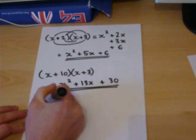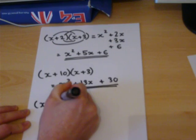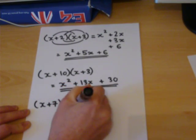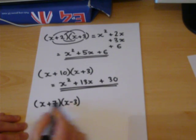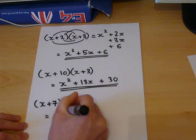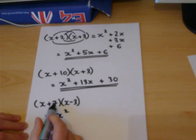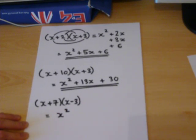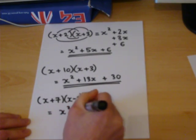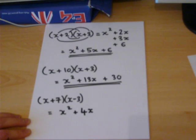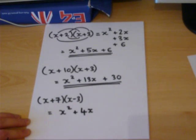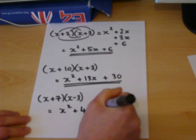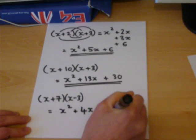The final one. Using the same logic, we have an x and an x times together, which is x squared. We have a 7 take away 3. 7 take 3 is 4. We have 4x. And finally, 7 times 3 is 21. There's a minus here, so that gives us a minus 21.